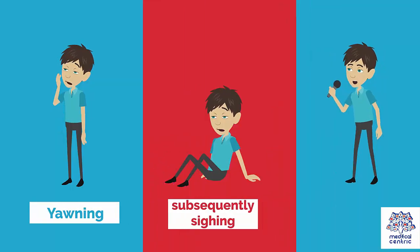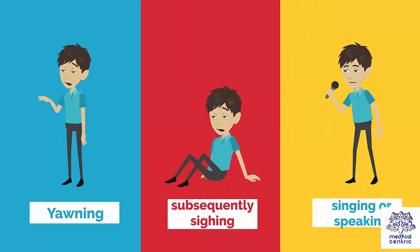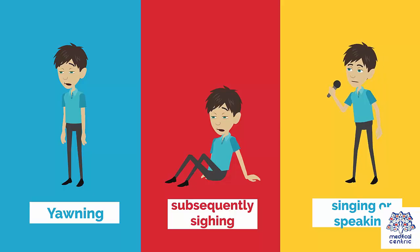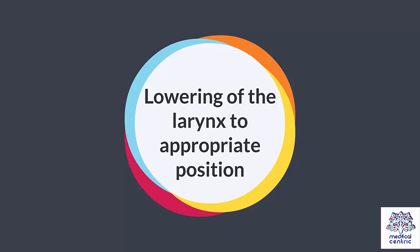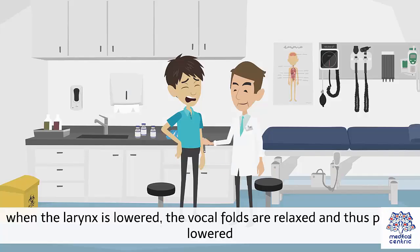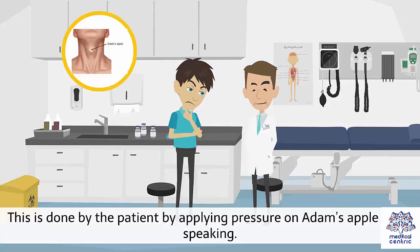Laryngeal relaxation can be done by yawning and subsequently sighing, singing, or speaking the M-word and by chewing while speaking. Another technique is lowering of the larynx to the appropriate position. When the larynx is lowered, the vocal folds are relaxed and thus pitch is lowered. This is done by the patient applying pressure on the Adam's apple while speaking.